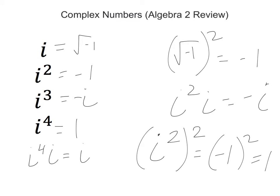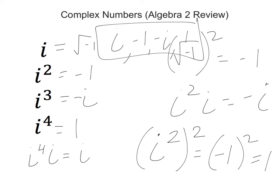So you find that you have this repeating pattern that goes: i, negative 1, negative i, 1. And any power of i just kind of circles back to that.